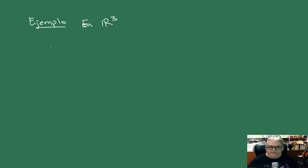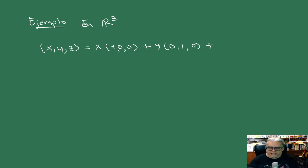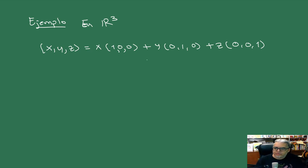En R3, cualquier vector de la forma (x, y, z) lo podemos escribir como x por (1,0,0) más y por (0,1,0) más z por (0,0,1). Este conjunto {(1,0,0), (0,1,0), (0,0,1)} es una base. De hecho, a esta le vamos a llamar la base canónica. A estos vectores les vamos a llamar ê₁, ê₂, ê₃. En otros cursos les llamarán i, j, k o lo que sea; acá les llamamos e₁, e₂, e₃ hasta eₙ cuando tengamos N dimensiones. Todos los vectores tienen una única representación de esta manera.